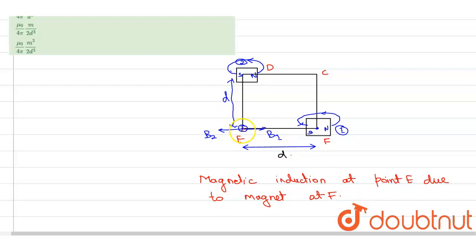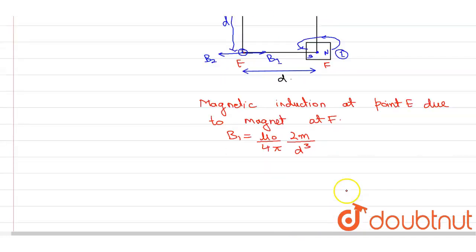So this is axial point. So this formula we know that is equal to B1 should be equal to mu naught divided by 4 pi 2 into M divided by D cube. And this will act along the direction of E to F.